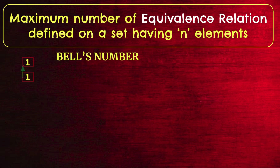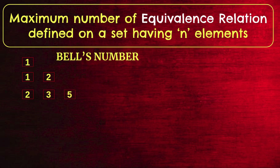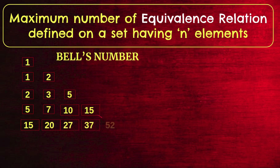Construction: start with 1. Then 1+1=2. The 2 comes down to begin the third row. Then 2+1=3, and 3+2=5. The 5 comes down to begin the fourth row. Then 5+2=7, 7+3=10, 10+5=15. The 15 comes down to begin the fifth row. Then 15+5=20, 20+7=27, 27+10=37, 37+15=52. The 52 comes down to begin the sixth row. Then 52+15=67, 67+20=87, 87+27=114, 114+37=151, 151+52=203.